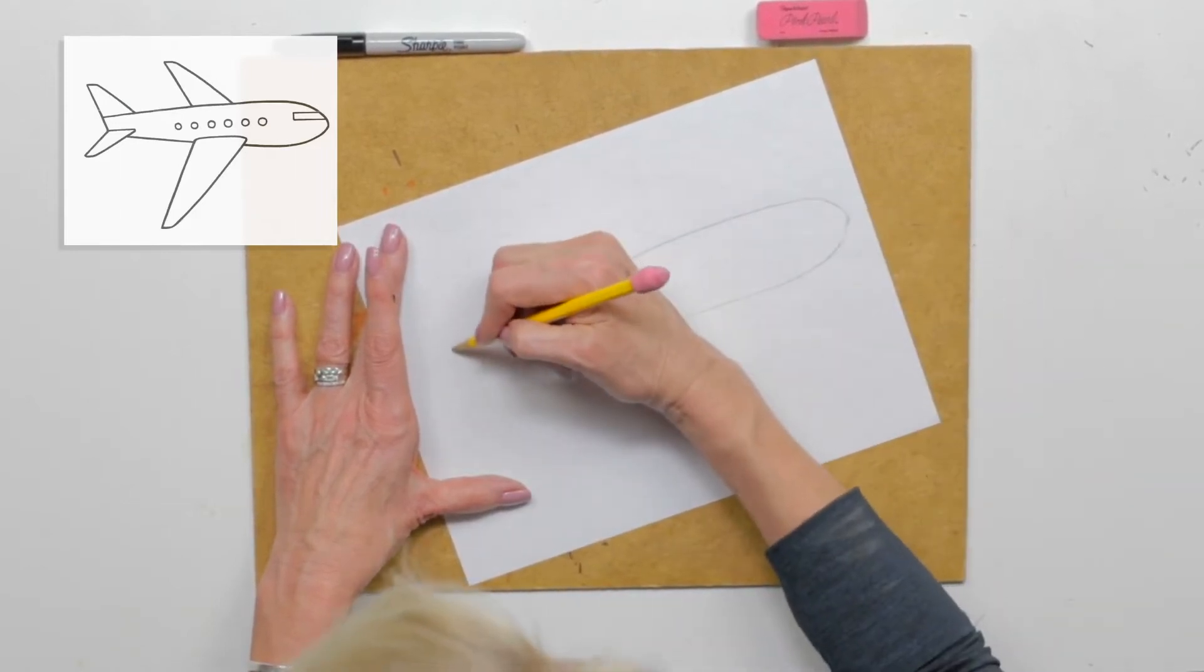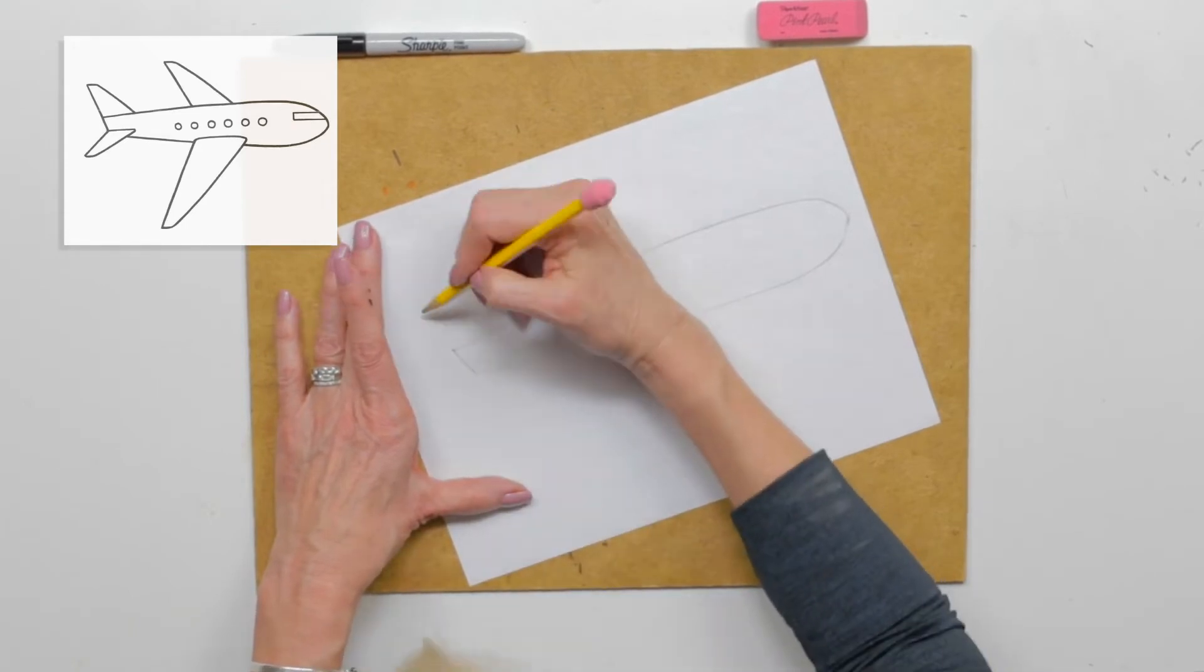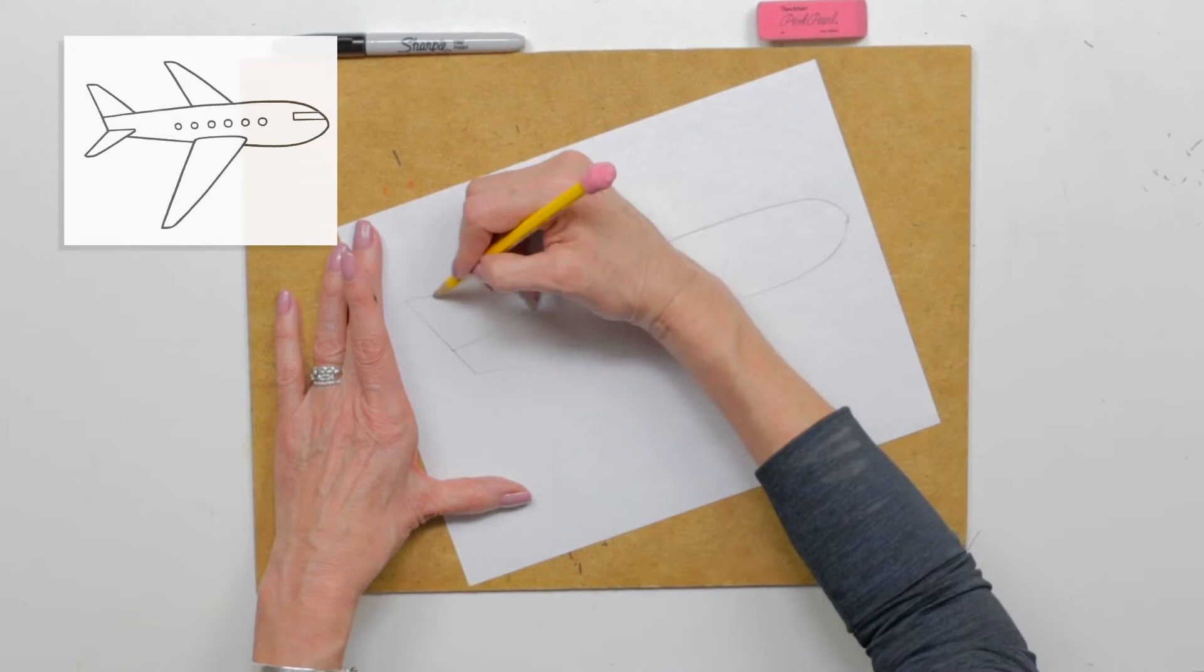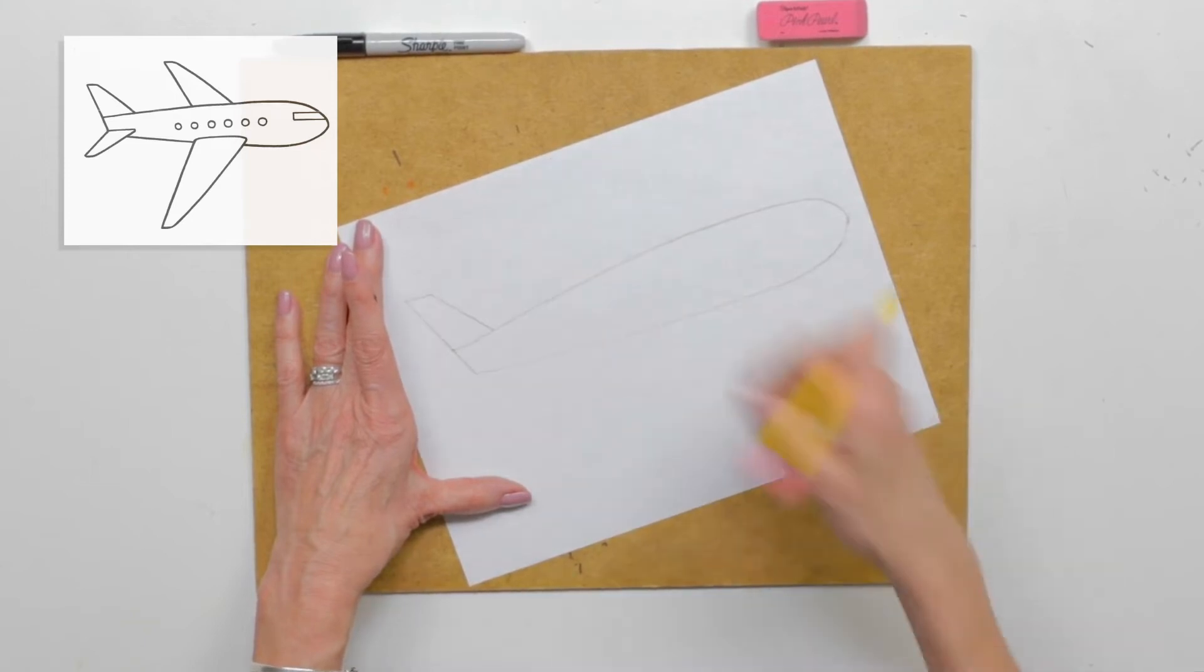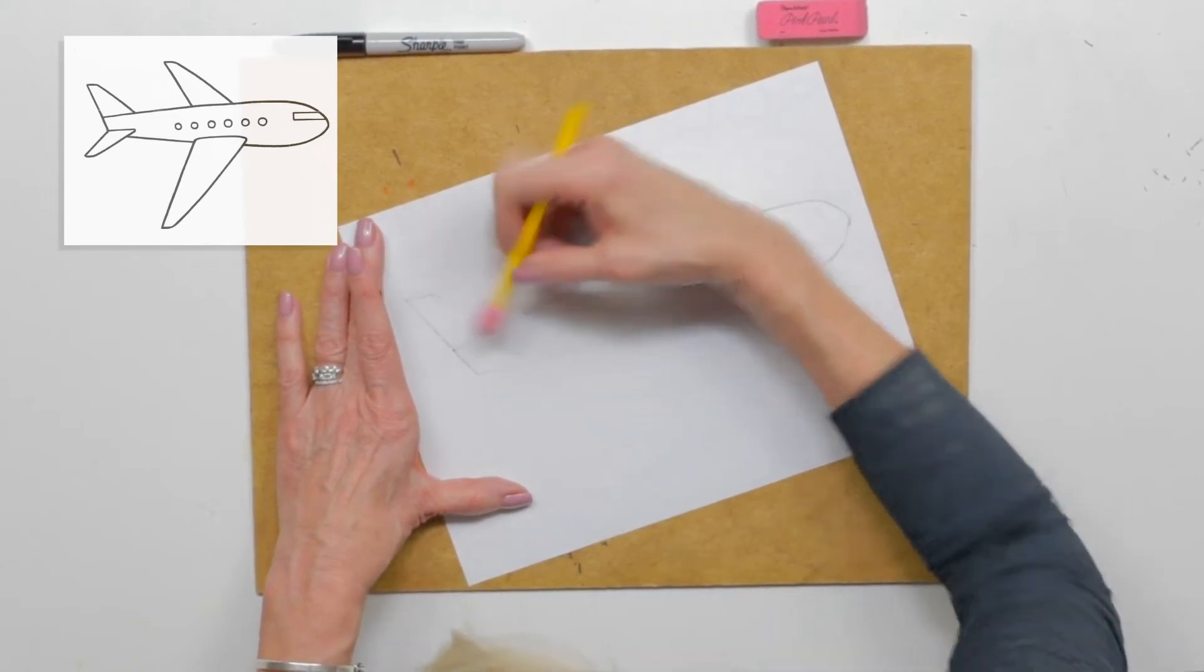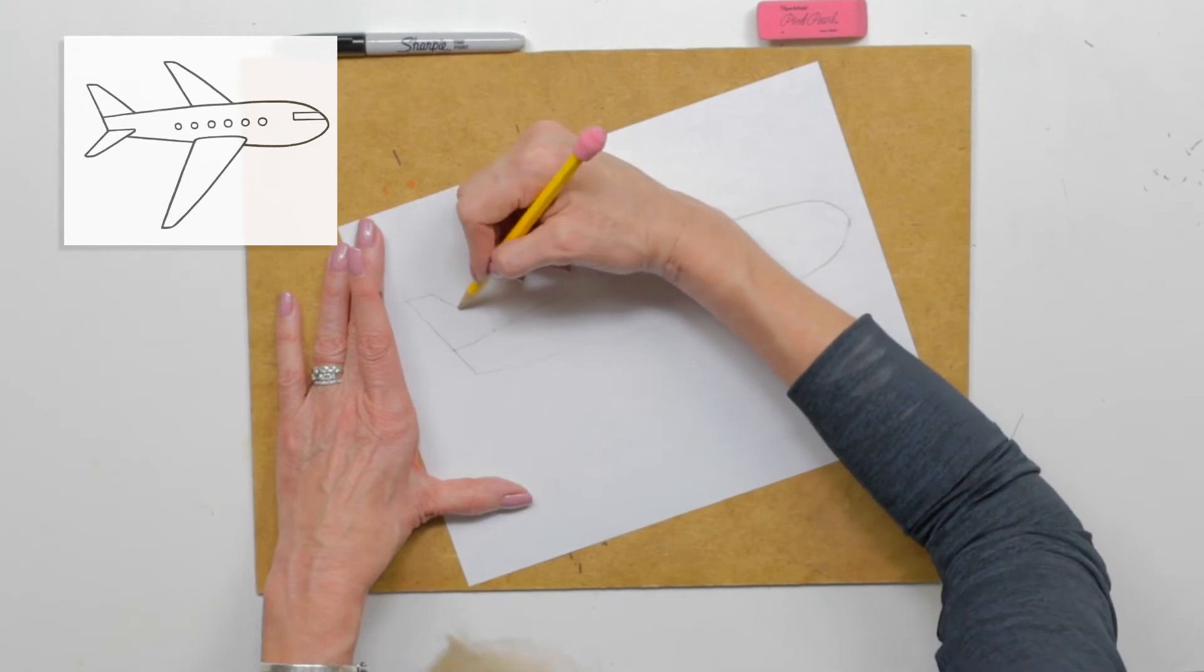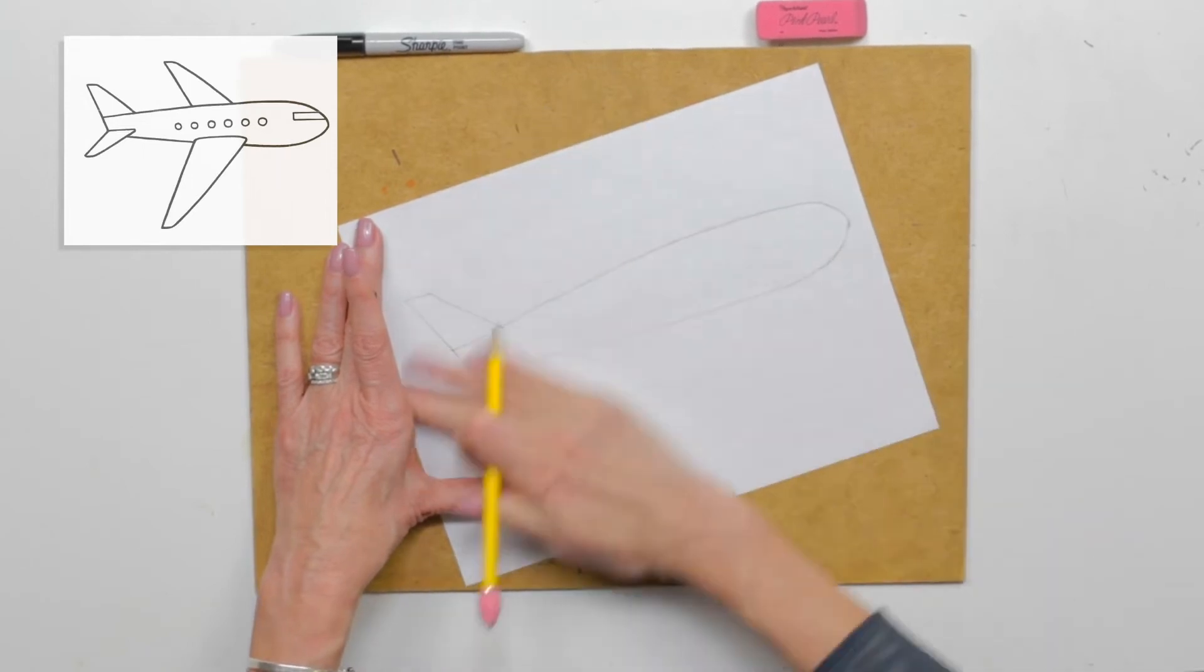Now, we're going to flatten out the back. And you know what? Right off the bat, I'm going to add my tail. That's the airplane term for it. See? You can always adjust. That's why we're using a pencil. Make it a little wider.